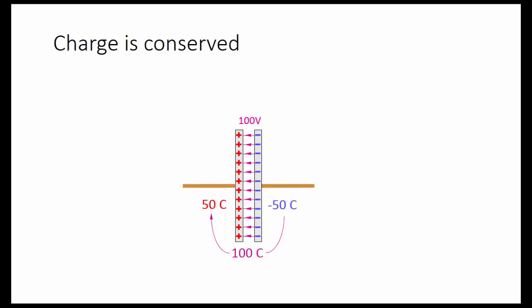If we connect a wire between these two sides, there's a fast rush of charge around here, which neutralizes everything, leaving zero coulombs on both sides again.